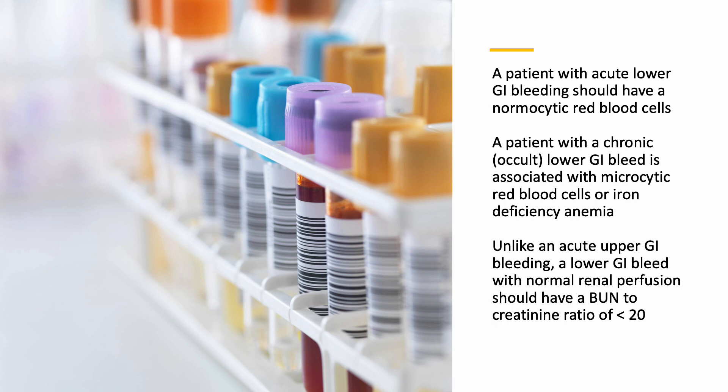Now let's talk about lab findings related to a lower GI bleeding. A patient with acute lower GI bleeding should have normocytic red blood cells. A patient with a more chronic lower GI bleed typically has a CBC showing microcytic red blood cells or results relating to iron deficiency anemia. Unlike an acute upper GI bleeding, a lower GI bleed with normal renal perfusion should have a BUN to creatinine ratio of less than 20.